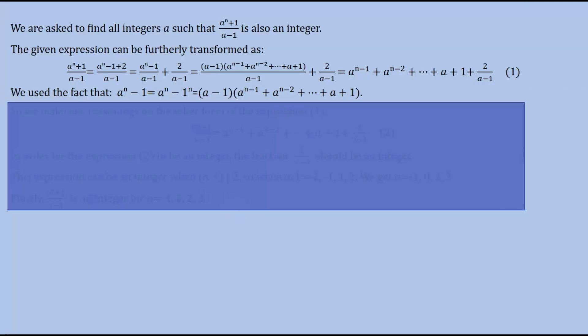So we are asked to find all integers a such that (a^n+1)/(a-1) is also an integer.